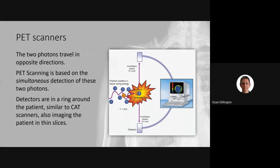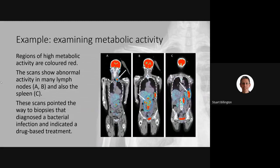Like a CT scanner, PET scanners have detectors that rotate around the patient, and the patient is moved through the ring of detectors, imaging slice by slice as the 'tomography' implies. The result is not just a two-dimensional image but a full three-dimensional image of the patient.